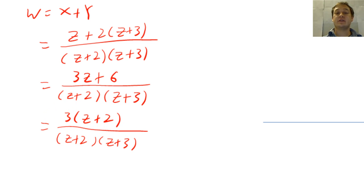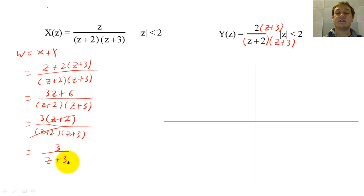If we add two Z-transforms together, then we have to check to see how the poles and zeros will interact. If a zero cancels out a pole, then the ROC will change. Both X and Y have ROCs of absolute value of Z less than 2. However, because their addition created pole zero cancellations for the pole at negative 2, W of Z will have one pole at negative 3, and the ROC of W will be the absolute value of Z less than 3.